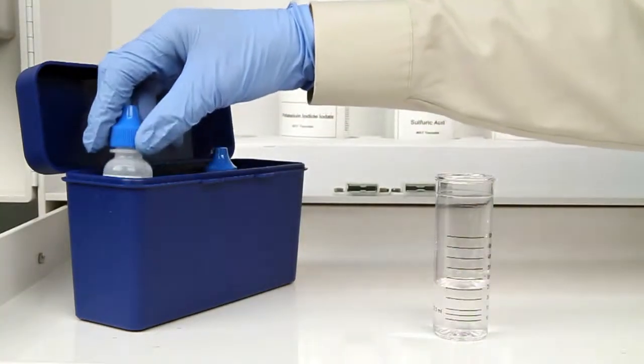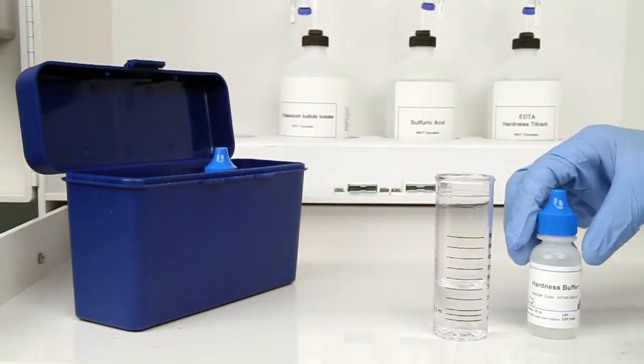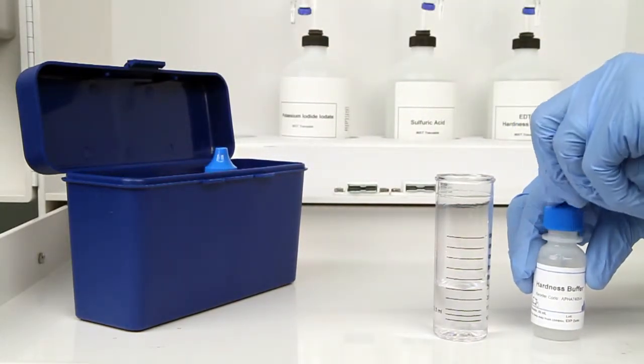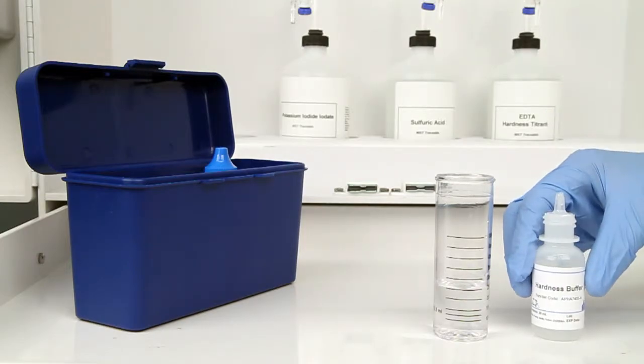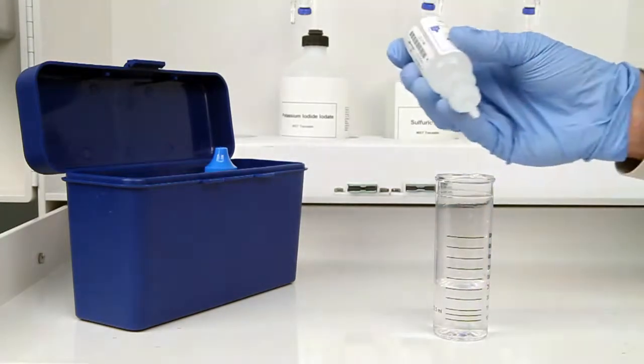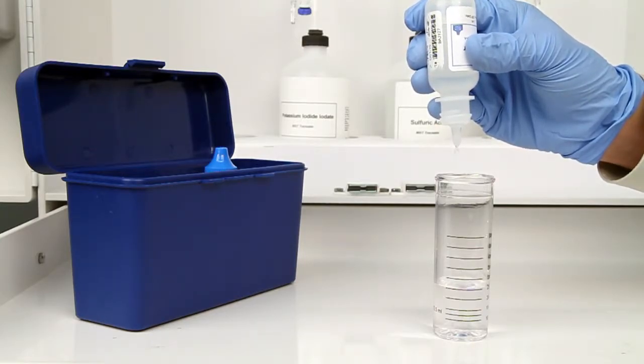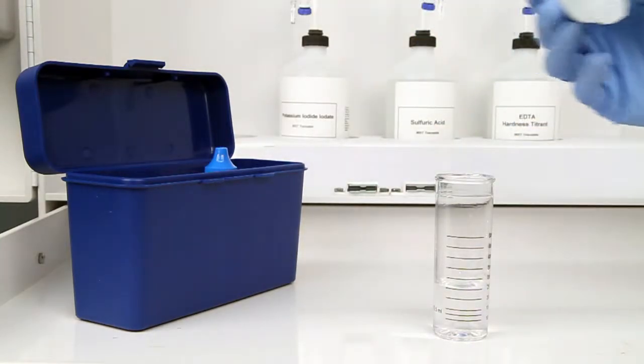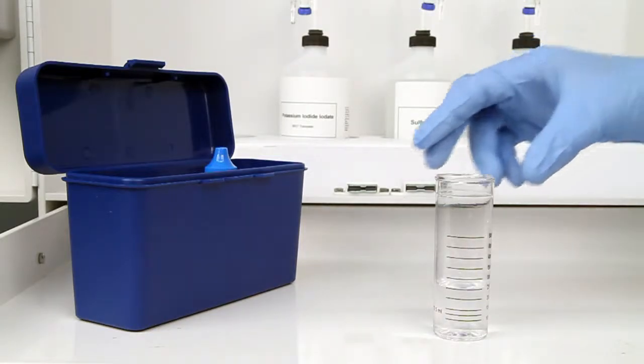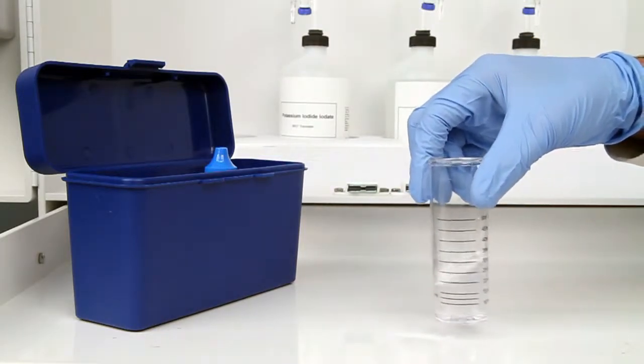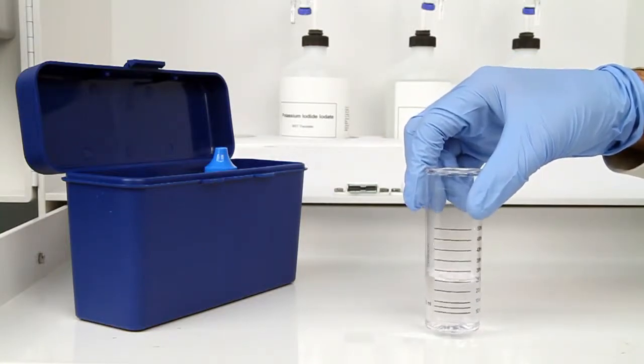The next step according to the Endpoint ID procedure is to add five drops of hardness buffer. The bottle contains a dropper tip, so it's important to hold the bottle vertically to get a consistent drop size. After the addition of each reagent, it's important to swirl the vial to make sure the reagents are properly mixed.